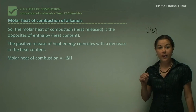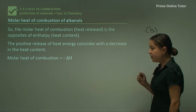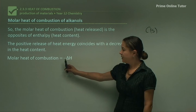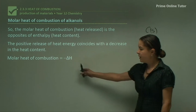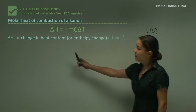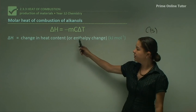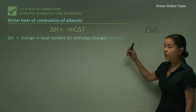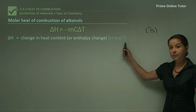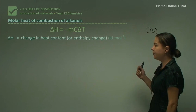We need to look at an equation to do calculations measuring the heat of combustion. The molar heat of combustion is written as negative delta H (a triangle and capital H). The equation is: delta H equals negative M times C times delta T. Delta H, the change in heat content or enthalpy change, is measured in kilojoules per mole. M is the mass of water being heated by the burning alkanol, measured in kilograms.